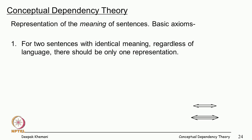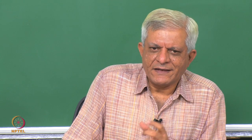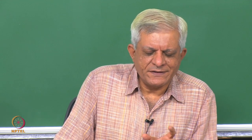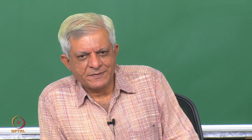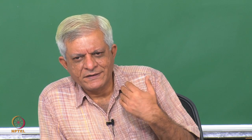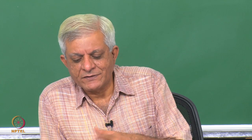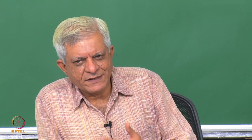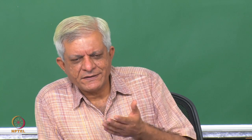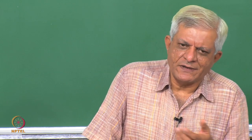The basic axiom of conceptual dependency representation is that two sentences with identical or near-identical meaning, regardless of language, should have the same representation. It is not English-based or Hindi-based or Tamil or Marathi — it is a language-independent form. Their work showed they could read a story in English and paraphrase it in Spanish, for example. That is possible because once you have a canonical, language-independent representation, you can generate output in any language — making it a mechanism for deep language translation.